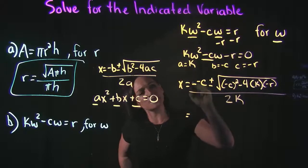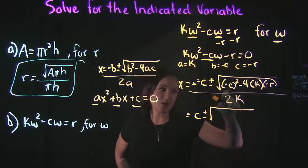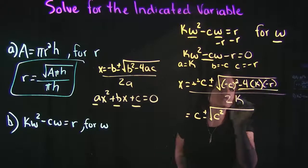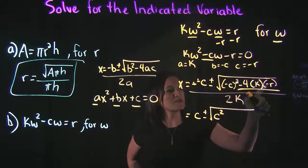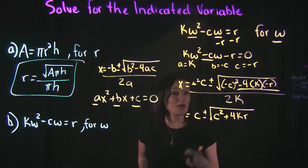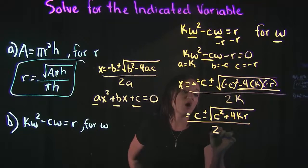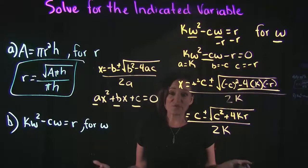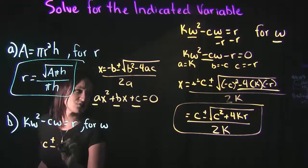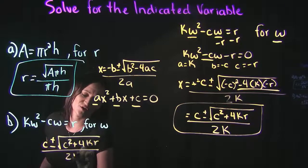Simplifying further: negative negative c gives us positive c by the double negative rule. Negative c squared means negative c times negative c, which is just c squared. The minus 4 times k times negative r — the two negatives make it positive — gives us plus 4kr. Since we don't know the actual values, we can't simplify further. Our final answer is w equals c plus or minus the square root of c squared plus 4kr, all over 2k.